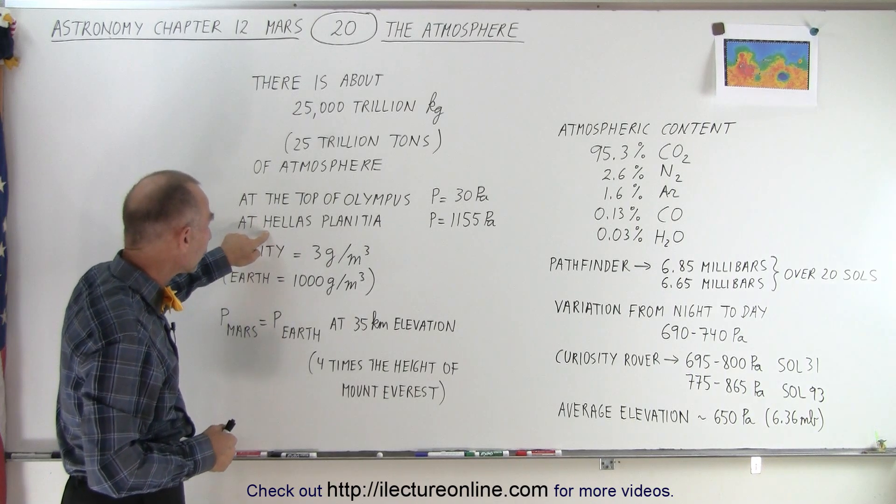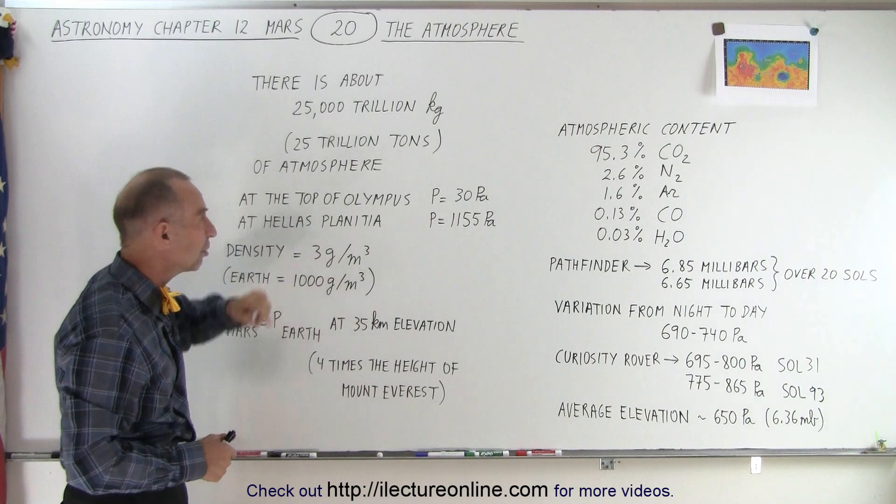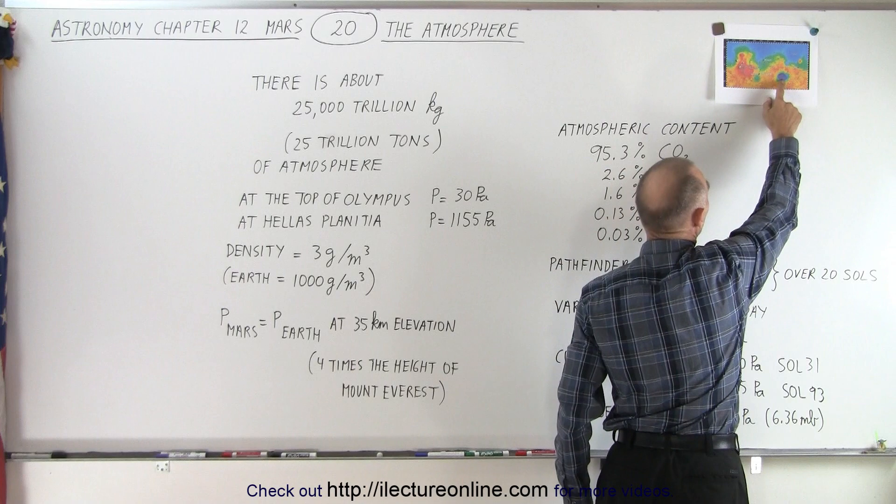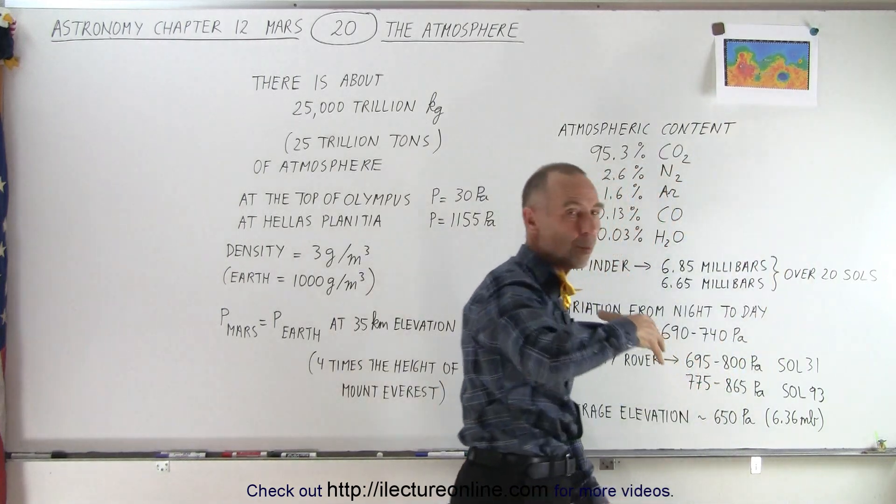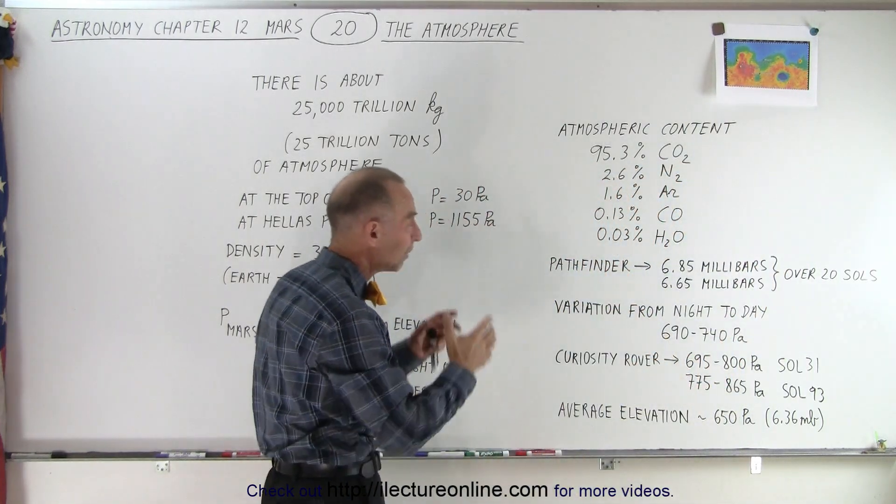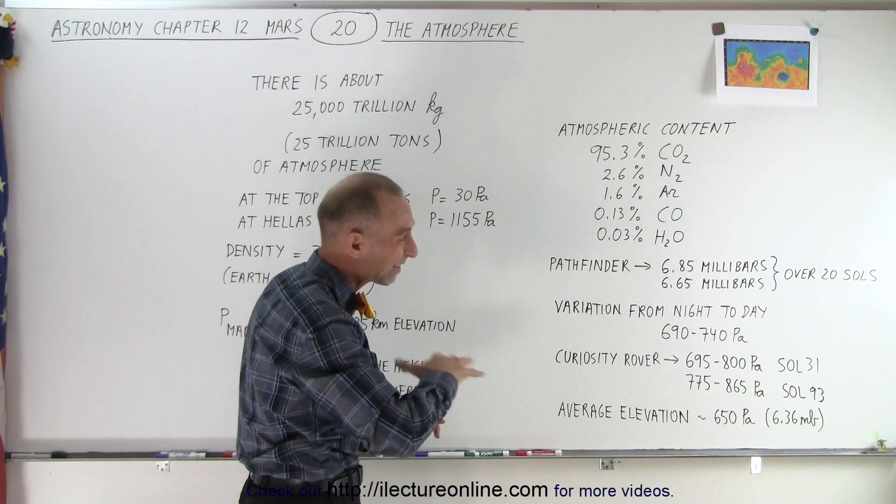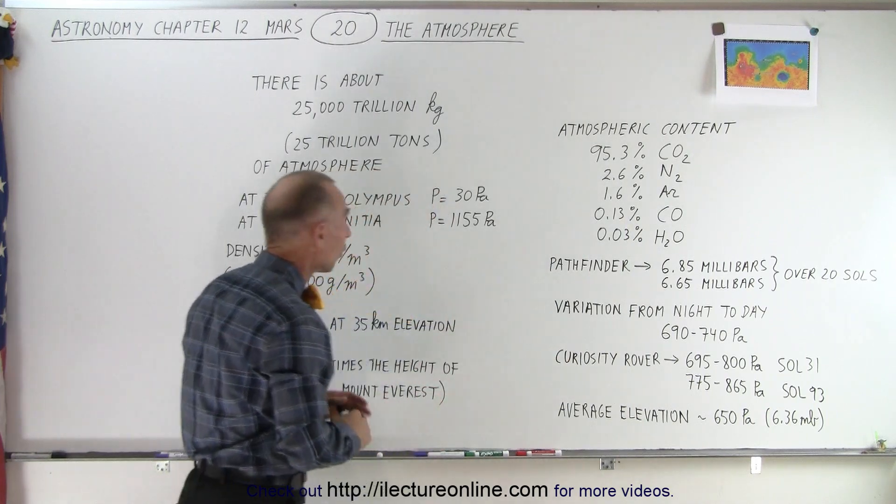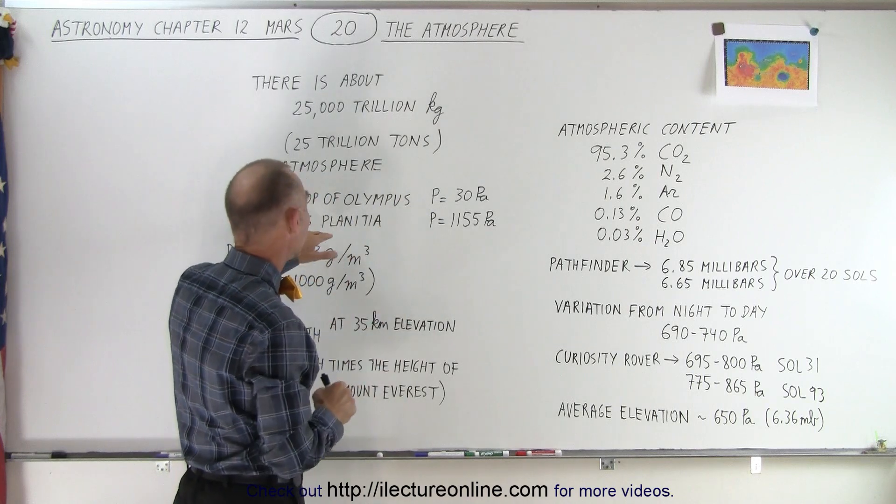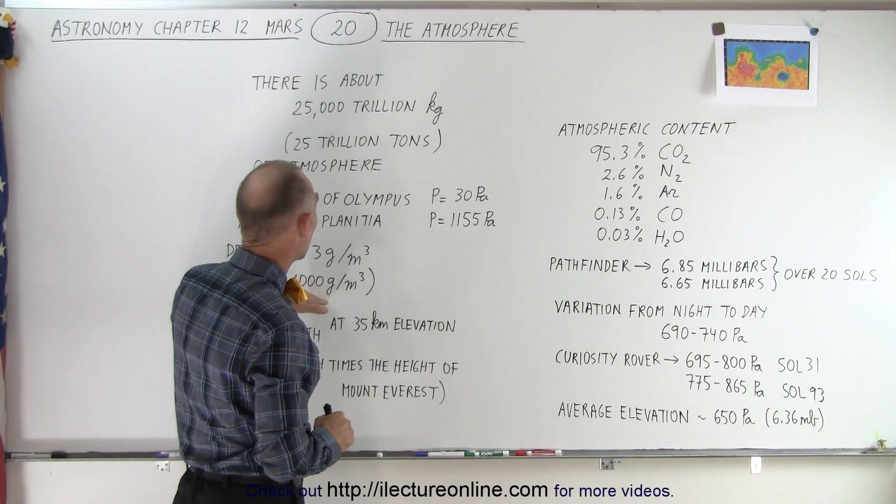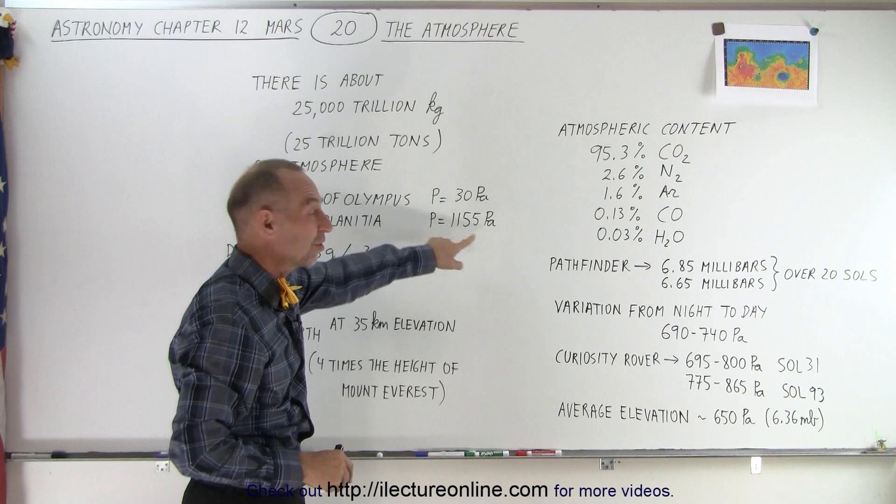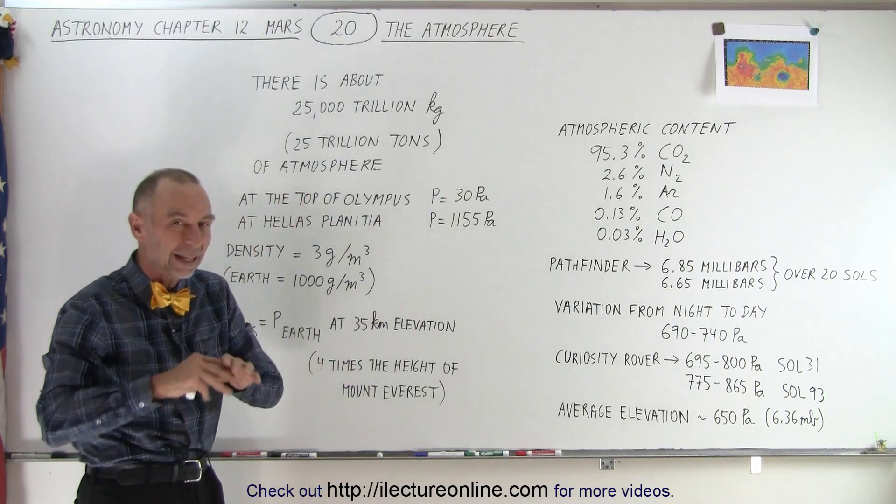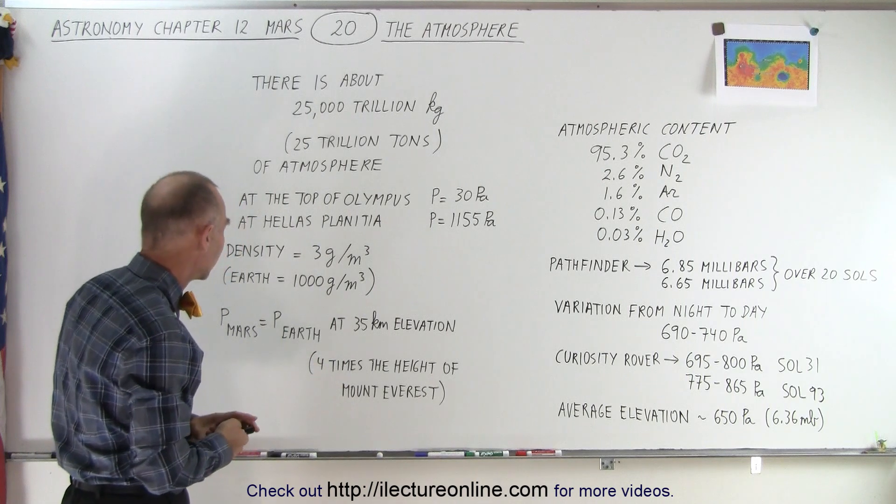And then at the lowest point on the planet, the Hellas Planitia, also sometimes called Hellas Basin, which is right here, which we believe is a huge impact crater from way in the beginning when the planet was formed. And that depression is about six miles below the average elevation of the planet, or of the surrounding area there, I should say. And because of that, it's so low that the atmospheric pressure is as high as 1,155 pascals, so almost double what it is on the average for the planet.